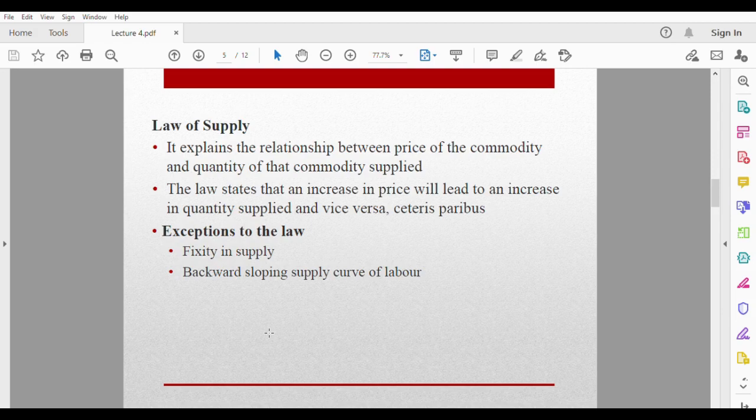But then when labor gets enough funds, it gets to a point where he wants to enjoy leisure. So even if you increase his salary, he is not willing to work more hours. At that point there is a backward sloping supply curve of labor. Though wage is increasing, labor has reduced his hours of work. So that is another exception to the law of supply.